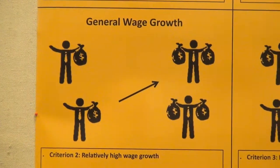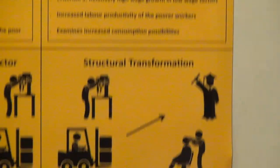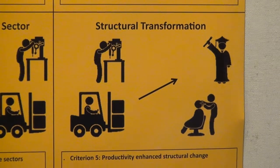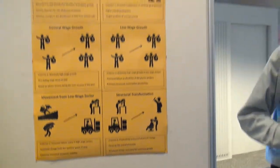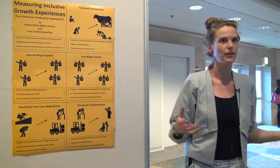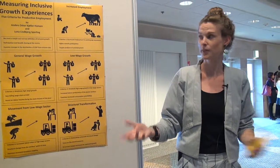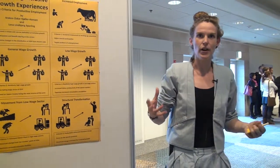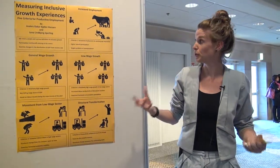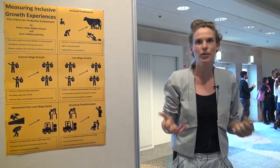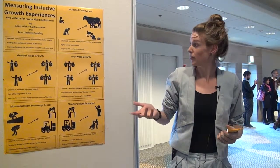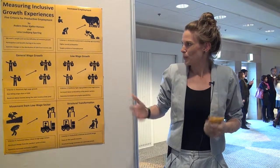The first four criteria build on an accounting framework of GDP from the income side and the internal distribution of this. The last criterion builds on the shift-share model used by McMillan and Rodrik — she's around here somewhere if you have questions related to that. The first criterion is increased employment: we assess whether there are more people participating in the growth process. This measures the economy's capacity to produce employment, but it's a quantitative measure, and unemployment is not the main problem in most developing economies — it's more underemployment.